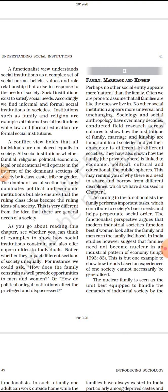There are a number of social institutions. In this chapter we will discuss family, marriage, and kinship, and there are also social institutions in the economic field, political field, education, and religion. But in this class we will focus on family, marriage, and kinship. Before that, let's understand what these terms mean.